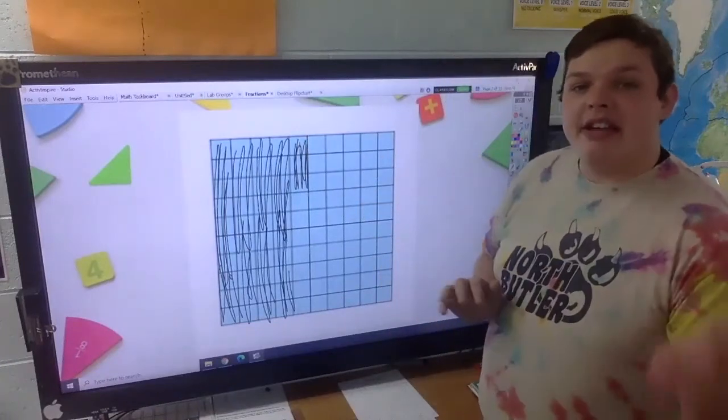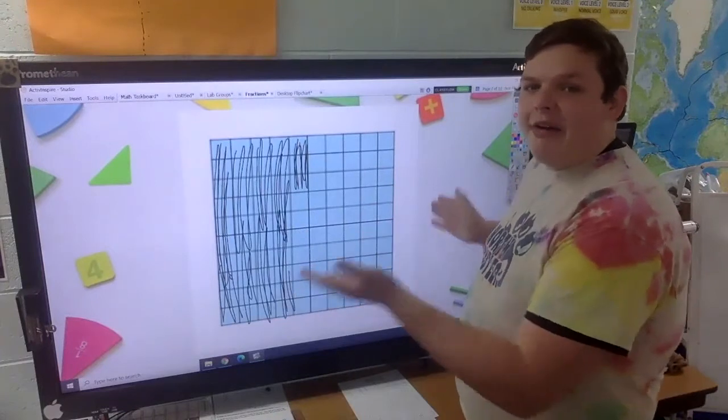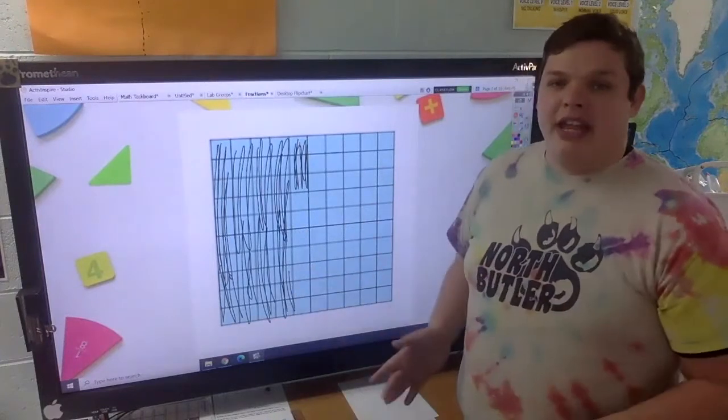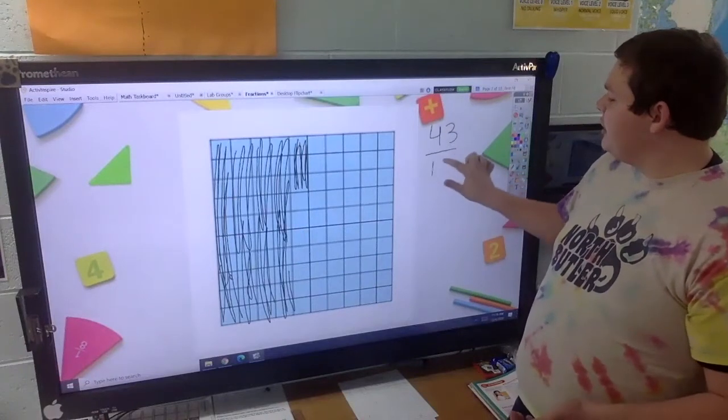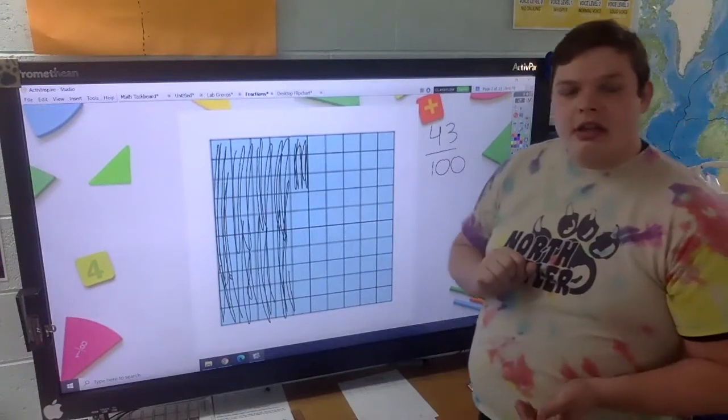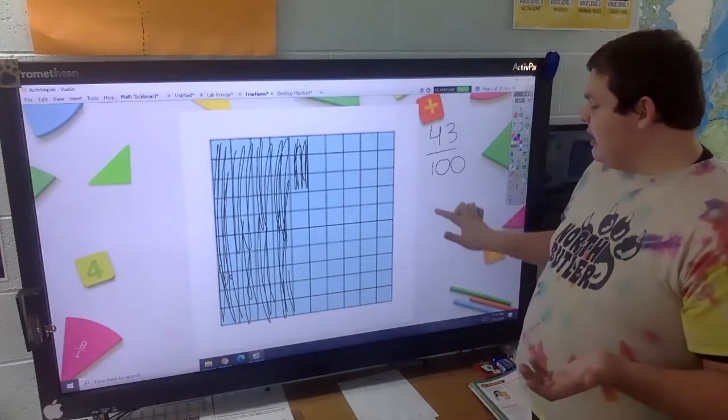So as a decimal, we have 43 pieces out of 100 filled in. So that would look like this. 43 out of 100. 43 hundredths.